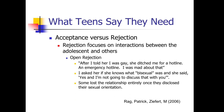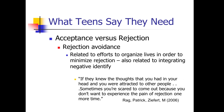Acceptance versus rejection: rejection focuses on interactions between the adolescent and others. Open rejection examples include statements such as: 'After I told her I was gay, she ditched me for a hotline — an emergency hotline. I was mad about that.' Another adolescent: 'I asked her if she knew what bisexual was and she says yes, and I'm not going to discuss that with you.' Some adolescents lost relationships entirely once they disclosed their sexual orientation. Rejection avoidance is related to efforts to organize one's life to minimize rejection, which is also related to integrating a negative identity. As one adolescent said: 'Sometimes you're scared to come out because you don't want to experience the pain of rejection one more time.'